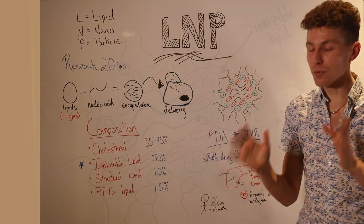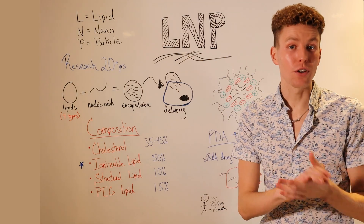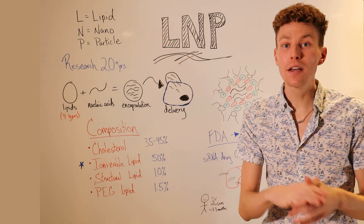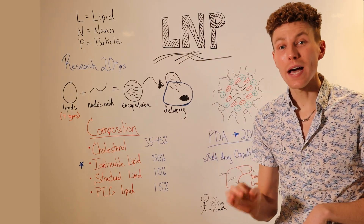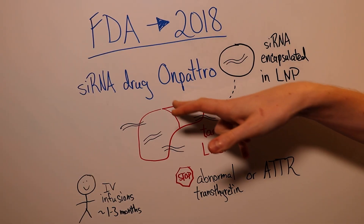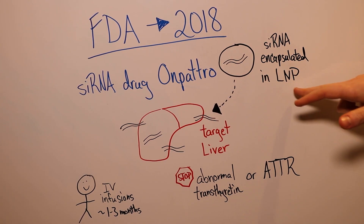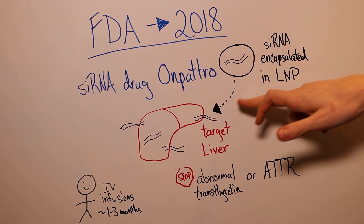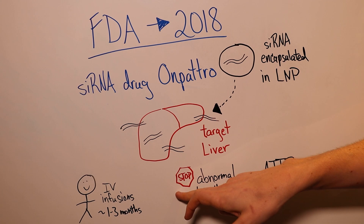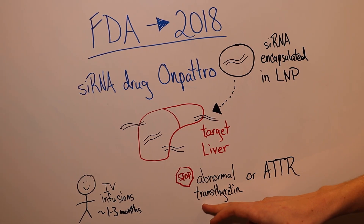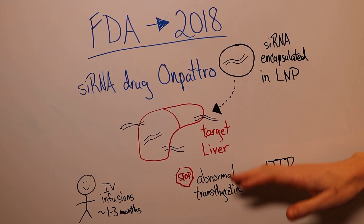We've heard a lot about these LNPs as they relate to the mRNA vaccines for COVID-19 made by Moderna and Pfizer-BioNTech. But actually, LNPs were first approved in 2018 with the drug Onpatro, which is an siRNA drug. What this drug does is allow for a targeted delivery to the liver to stop an abnormal protein from being made called transthyretin, and this disease is also known as ATTR.